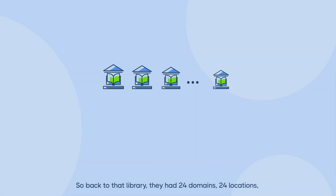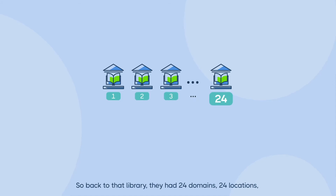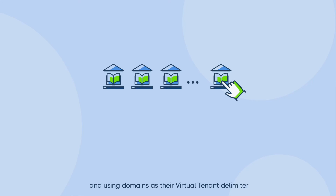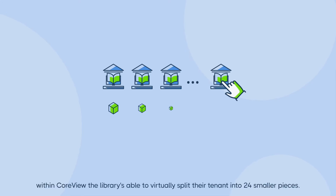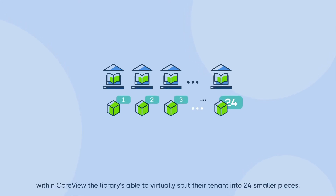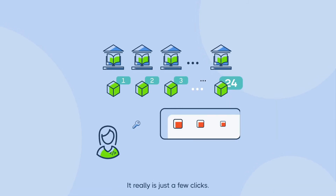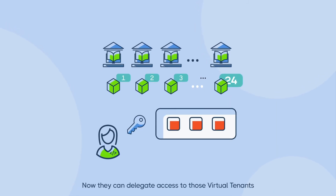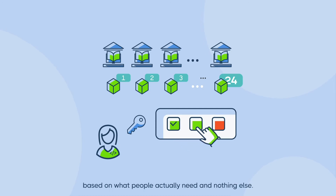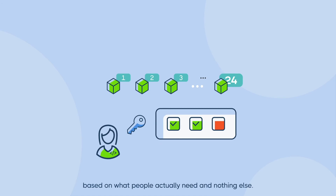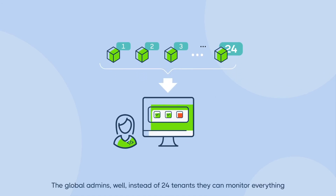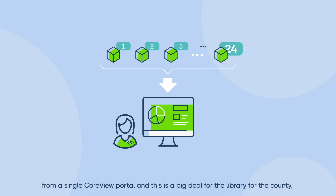So back to that library. They had 24 domains, 24 locations. And using domains as their virtual tenant delimiter within CoreView, the library is able to virtually split their tenant into 24 smaller pieces. It really is just a few clicks. Now they can delegate access to those virtual tenants based on what people actually need and nothing else.